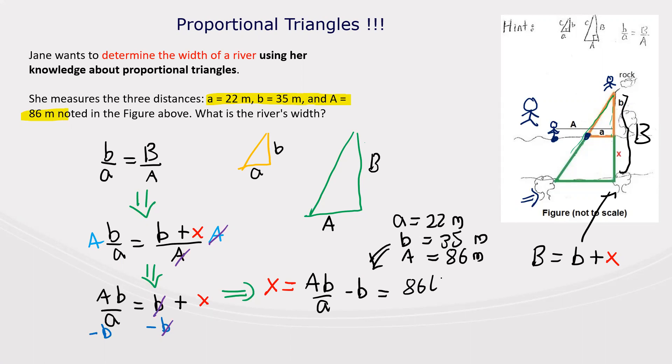So 86 times 35 over 22 minus 35. Let's do the math. This equals 136.81 minus 35, which gives our final solution of 101.8 meters. That's the width of the river.